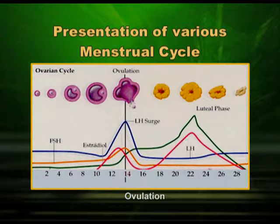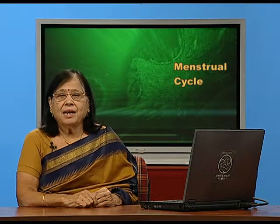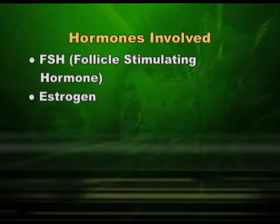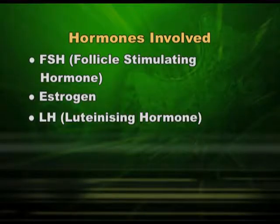We have now reached the Graafian follicle, which is ready to ovulate at mid-cycle. Once ovulation takes place, the ovum is released and the Graafian follicle is converted to the corpus luteum — that is, the Graafian follicle minus the ovum. The corpus luteum is a temporary endocrine gland and the source of the second female sex hormone, progesterone. I would also like to mention another hormone: LH, or luteinizing hormone, coming from the anterior pituitary.